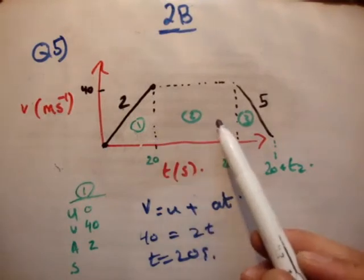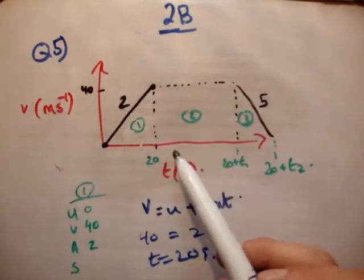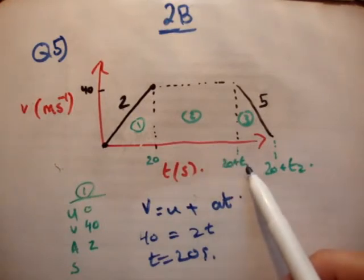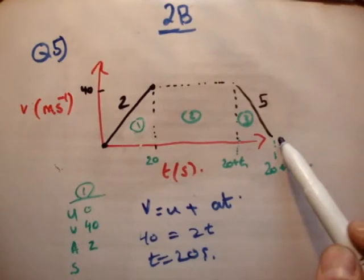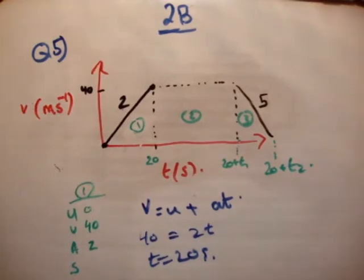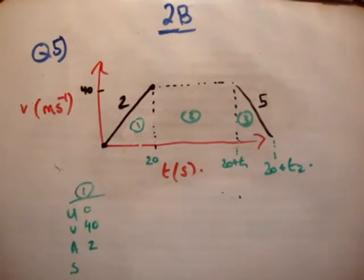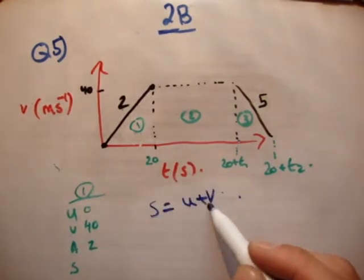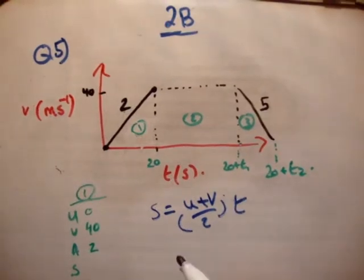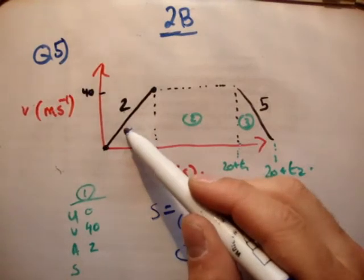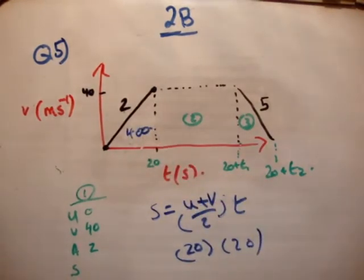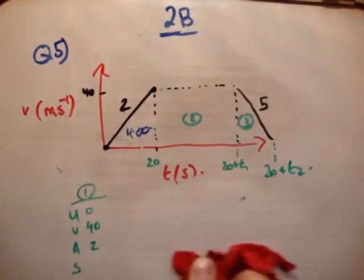And if I said from here to here is T2 seconds, then from here to here is 20 plus T2 seconds. Let's get the distance traveled in region 1. I'm going to use the formula S equals U plus V over 2 times the time, which equals 40 over 2, which equals 20 times 20, equals 400 meters. Notice I'm not writing down everything because this is a carbon copy of the other questions we've been doing.